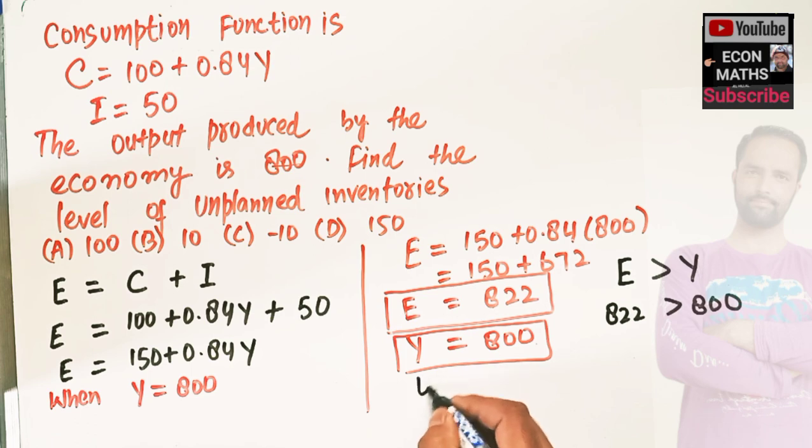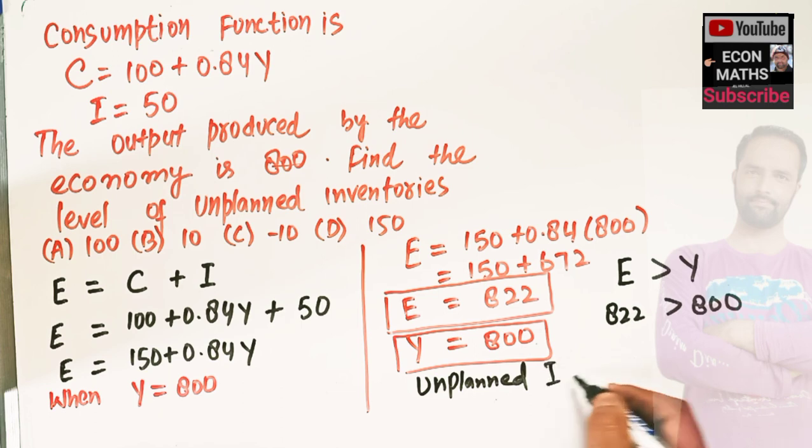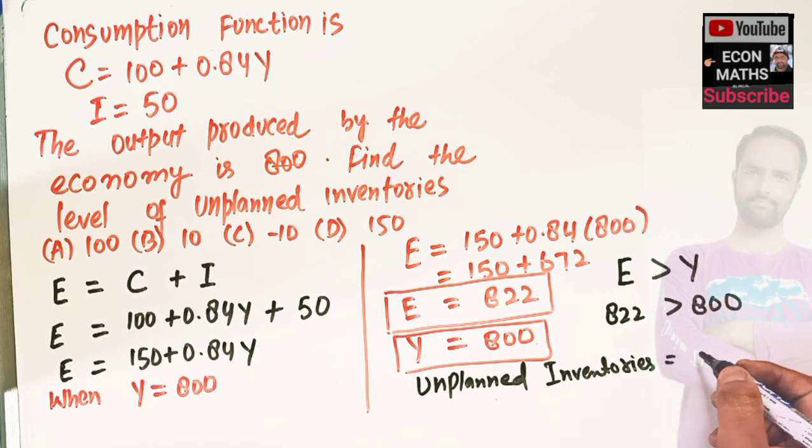Then our unplanned inventories is equal to output level minus the aggregate expenditure, which is 800 minus 822. That comes out to be minus 22.